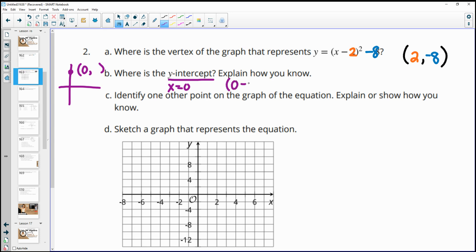So we want to plug in x equals 0 and find out what the y-coordinate will be. So then we'll put in 0 for x minus 2 squared and then minus 8. So then 0 minus 2 is negative 2 squared minus 8. Negative 2 squared is 4 minus 8 is negative 4. So our y-intercept is going to be the point (0, -4).